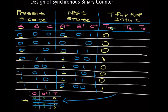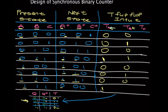Now we switch to the T flip-flop input for B. Where B=0 and B+=0, T is 0. Where B=0 and B+=1, T is 1. Where B=1 and B+=1, T is 0. Where B=1 and B+=0, T is 1. Where B=0 and B+=0, T is 0. Where B=0 and B+=1, T is 1. Where B=1 and B+=1, T is 0. And where B=1 and B+=0, T is 1.